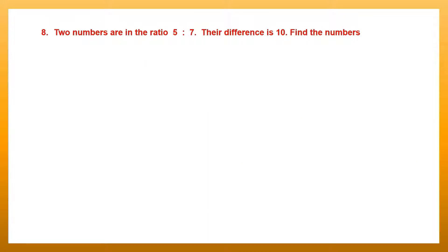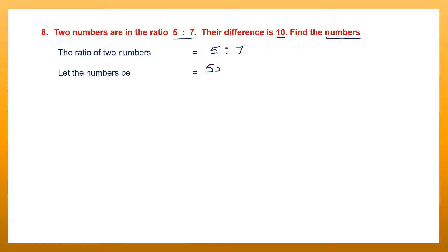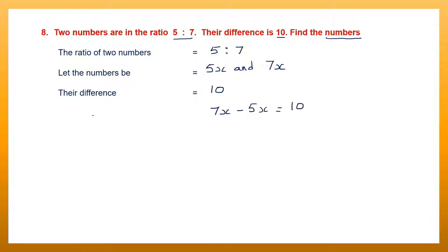Next question. Two numbers are in the ratio 5 is to 7 and their difference is 10. We have to find the numbers. The ratio of two numbers is 5 is to 7. We'll assume the numbers to be 5x and 7x. Their difference given in the question is 10, so 7x minus 5x equals 10.